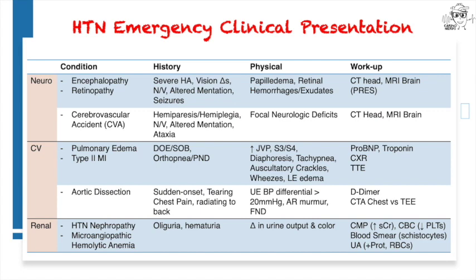Hypertensive nephropathy is not always clinically apparent. It most commonly presents with microscopic hematuria on UA. However, if it's more severe, you can get an overt acute kidney injury with a creatinine bump, as well as clinical changes in urine character, or worse, oliguria. Hypertensive emergency can also cause microangiopathic hemolytic anemia, with schistocytes appearing on the blood smear, as well as a consumption of platelets resulting in thrombocytopenia.